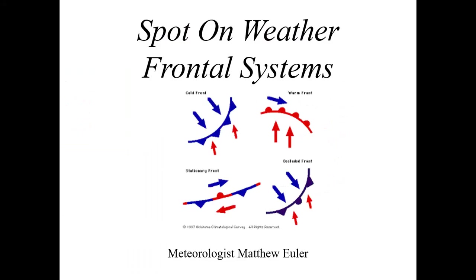Good morning, I'm Spot On Weather meteorologist Matthew Euler and today we're going to talk about an interesting topic: frontal systems. These are what cause those major temperature changes that we experience, especially in the fall and winter months. We can have a major change in temperatures on the order of 10 to 20 degrees Fahrenheit simply by noticing where these fronts are located. I've seen some crazy temperature swings, especially across southeast Virginia, due to these frontal movements.